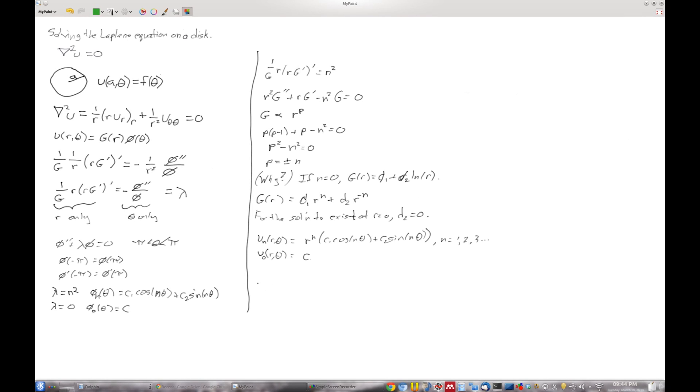So, the conclusion to all of this is that we have a complete solution that looks like a constant c, plus a sum from n equals 1 to infinity of r to the n.